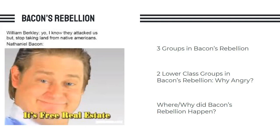The second group is the Native Americans, and the third group is the colonial elite. Those two last groups — the Native Americans and the elite — are the two groups that the poor fought against. So we've got our setup: the poor colonists led by Nathaniel Bacon on one side, and the Native Americans and the colonial elite on the other. There were two lower class groups that ended up uniting to fight in Bacon's Rebellion, and they were angry — that's why they joined together.